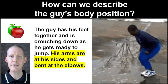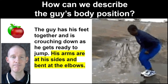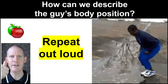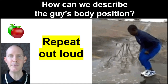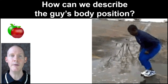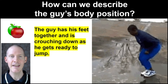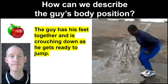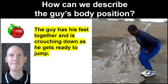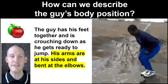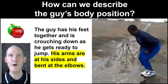His arms are at his sides and bent at the elbows. Repeat out loud — let's do some pronunciation. Repeat after me. How can we describe the guy's body position? The guy has his feet together and is crouching down as he gets ready to jump. His arms are at his sides and bent at the elbows.